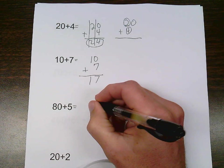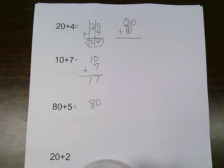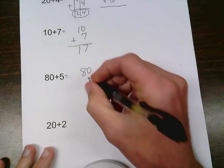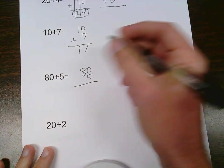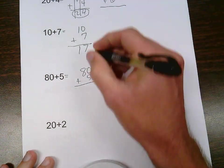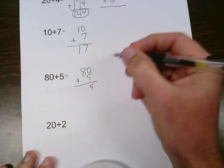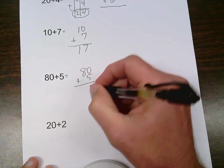80 plus 5, put the 80 up top, put the 5 underneath, lining up those place values, and 0 plus 5 is 5, 8 plus nothing is 8, 85.